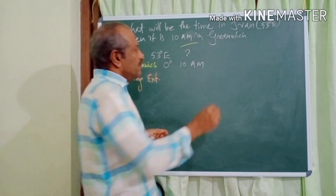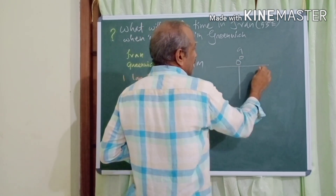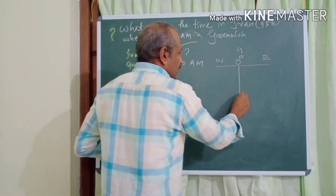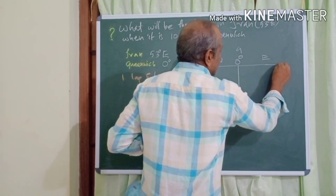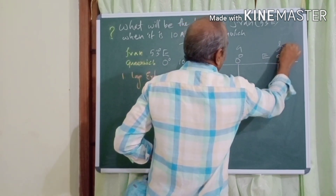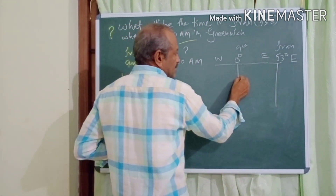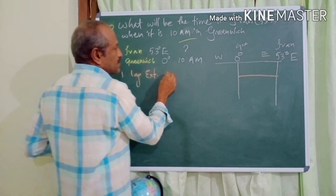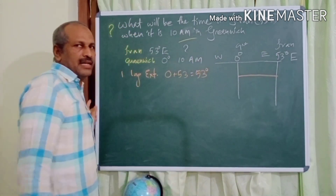The first step is longitudinal extension, meaning the angular distance from Greenwich to Iran. You can find this using a figure. Here is zero degree longitude — that is Greenwich. The right-hand side is east and the left-hand side is west. From zero to 53 degrees east — that is Iran. So longitudinal extension is 0 plus 53, which is 53 degrees.